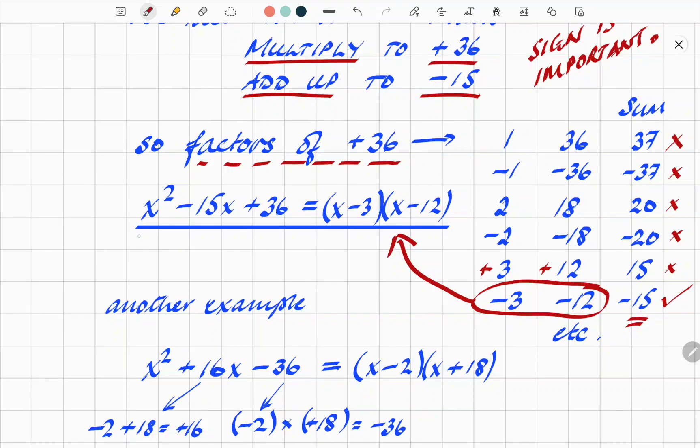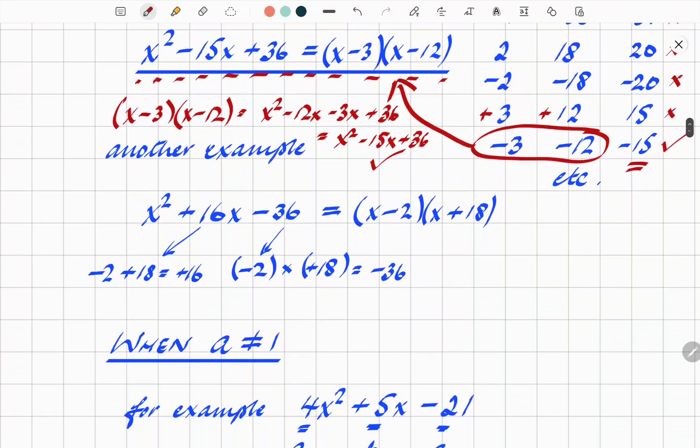So those go straight into your factorized version. So we can then say that x² - 15x + 36 can be written as (x - 3) times (x - 12). And that will multiply out. And I'll just illustrate the point, actually. If you're not sure, double check by actually multiplying out very quickly. So you've got x² - 12x - 3x + 36. And that comes to x² - 15x + 36. So there we are. Double checked and it's correct.